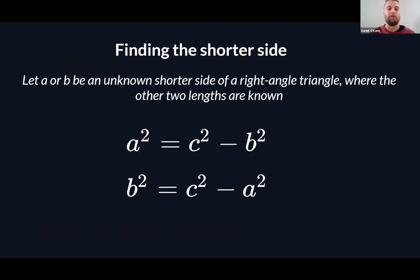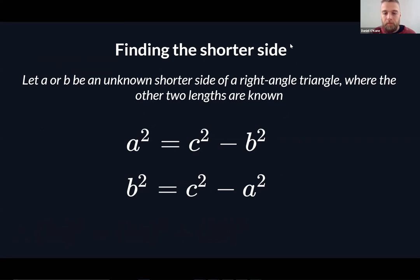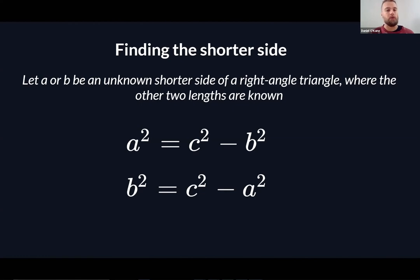So that's a cool little algebraic proof — that's the challenge question complete. Finding the shorter side is the work we're going to be starting today. Now that we've done that revision, we can go back to Pythagoras' Theorem and start practicing finding the shorter sides of right angle triangles.